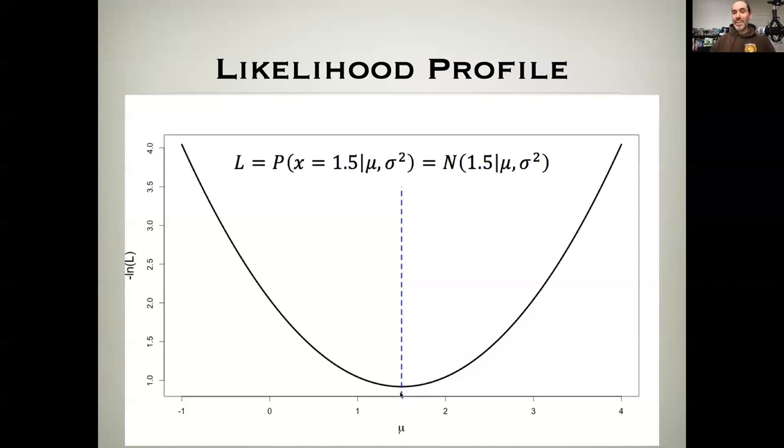So if you only observe one data point at one and a half, and you want to guess what the mean is, guess one and a half. It's probably not one and a half, but it's more likely to be one and a half than any other value. And you can not just say that it's more likely, but you can say the relative odds of that versus other choices.